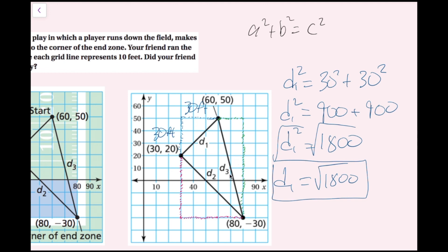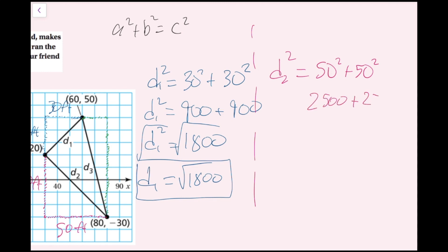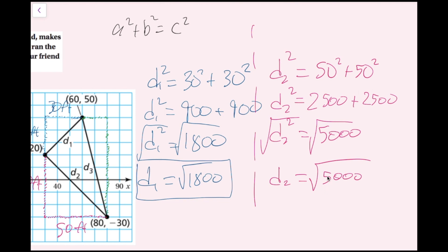Now for D2, the pink right triangle: this side is 5 spaces, which is 50 feet, and so is the other leg — 50 feet. So D2 squared equals 50 squared plus 50 squared, which is 2500 plus 2500, giving D2 squared equals 5000. Taking the square root: D2 equals the square root of 5000.